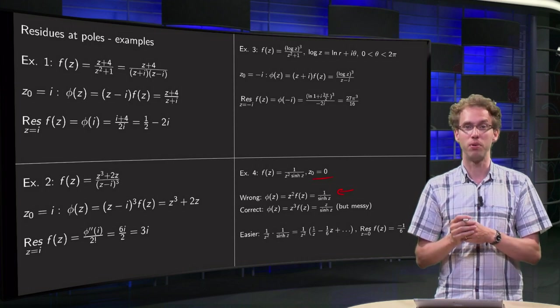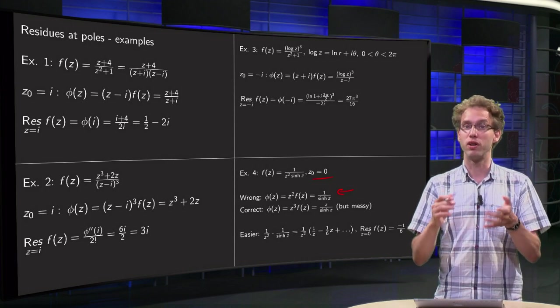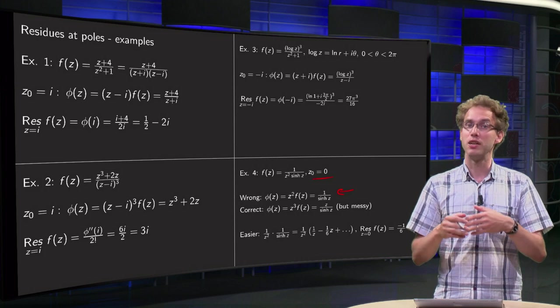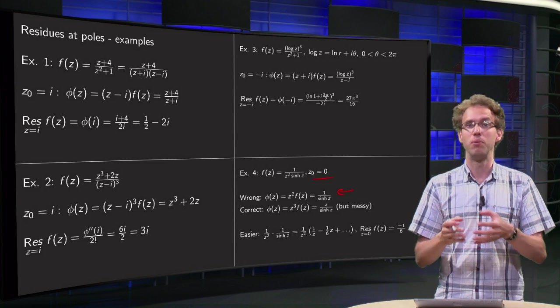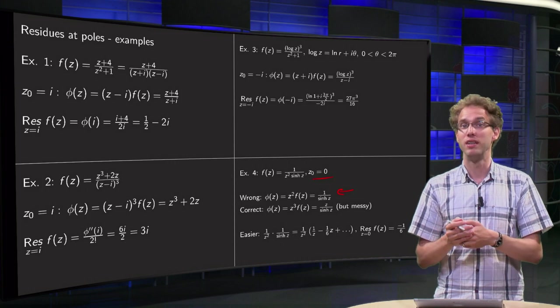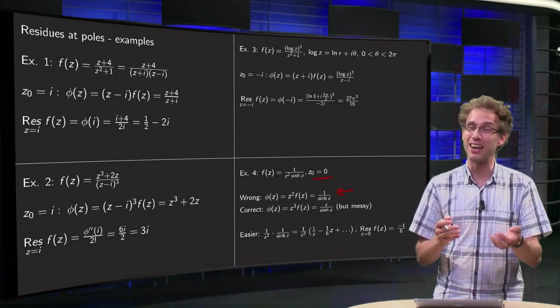Then you see sine hyperbolic of 0 equals 0. So, you get 1 over 0 blows up. So, your residue would be infinity. Well, that's not possible. And, that is because you don't have a second order pole, but a higher order pole.